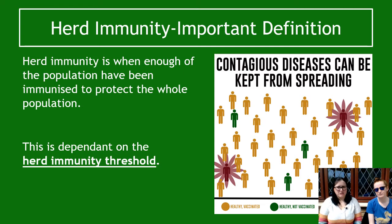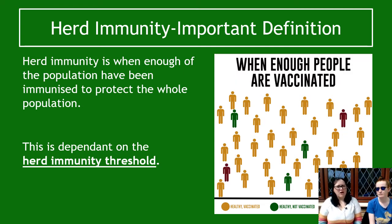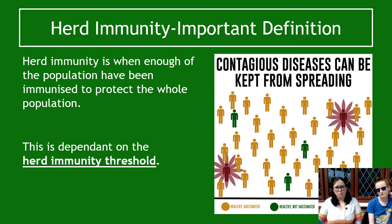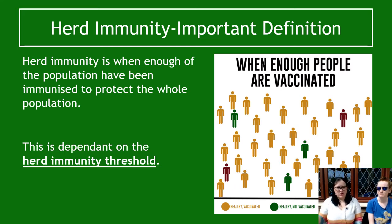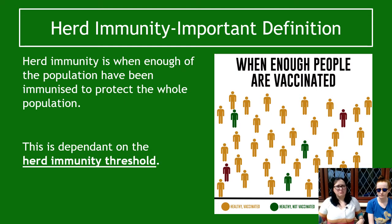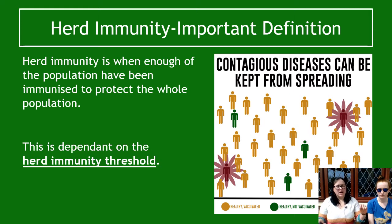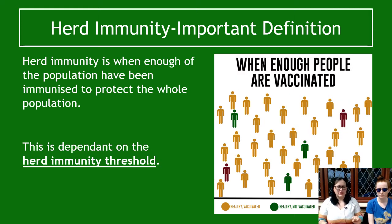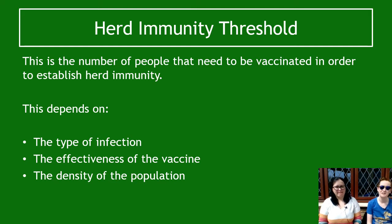This leads us into the idea of herd immunity — a term you might have heard in the news. Herd immunity is when enough of the population have been immunized against an infection to protect the whole population. Not everybody will be immune, but enough people so that the contagious disease cannot spread — immune people are acting like a wall, a barrier. The herd immunity threshold is a slightly different thing: it's the number of people that need to be vaccinated for herd immunity to actually occur.